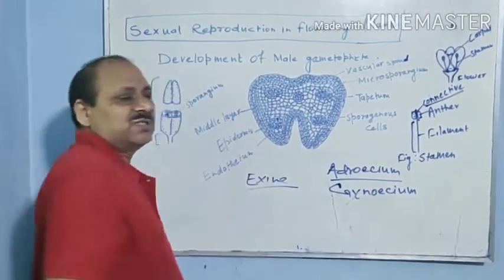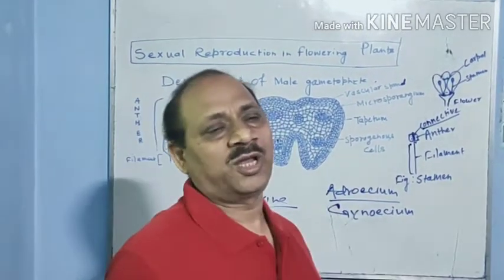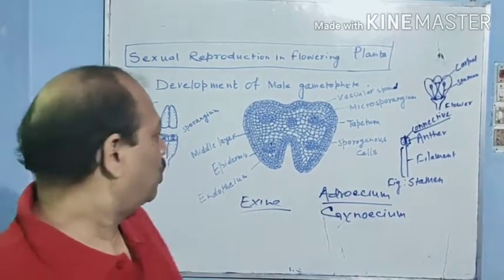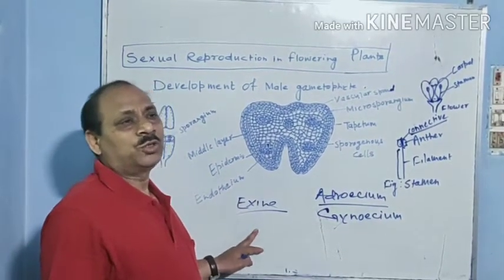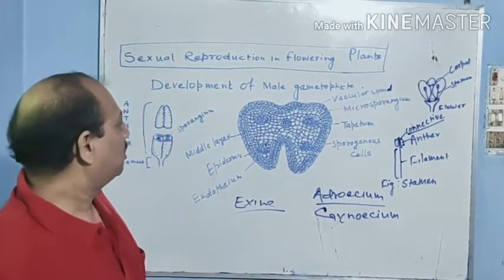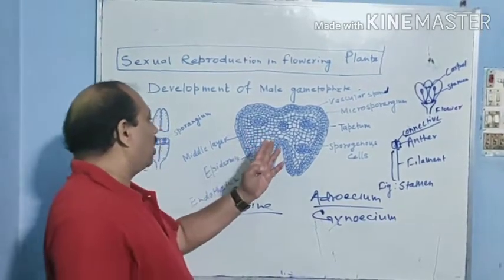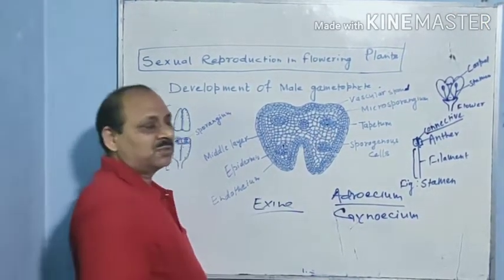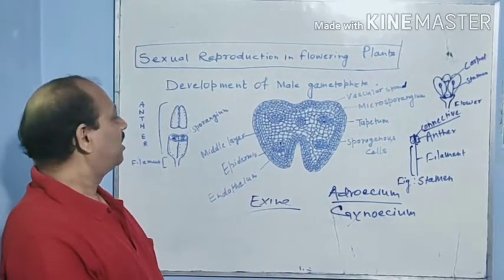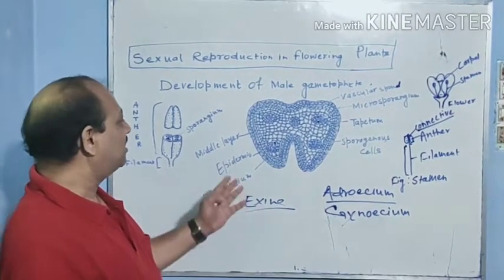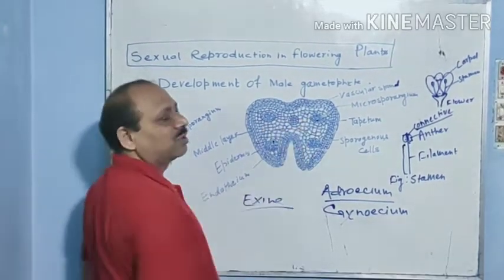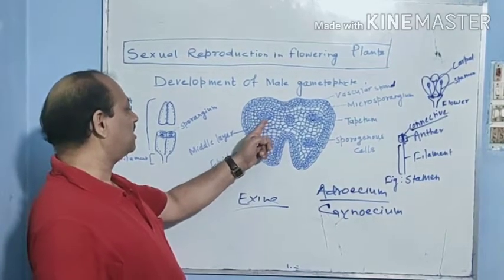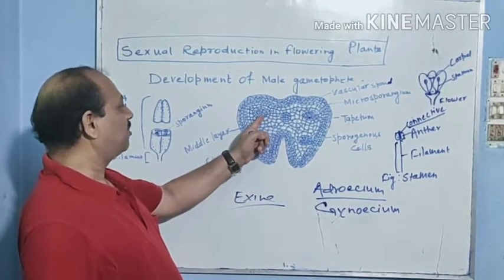What is exine? Exine is the outermost layer of the microspore, which protects the microspore. Now we see that there are four microsporangia, and they appear to be located in each corner of the anther.